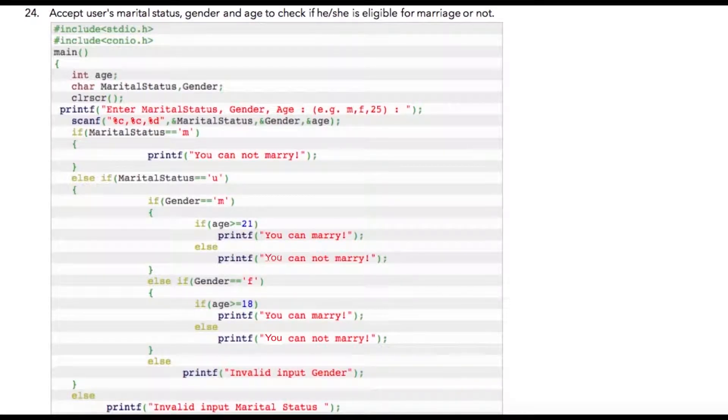In this program we are going to accept users' marital status, gender information, and age to check whether he or she is eligible for marriage or not. You must be aware that in India, a male with age greater than or equal to 21 or a female with age greater than or equal to 18 are eligible for marrying.